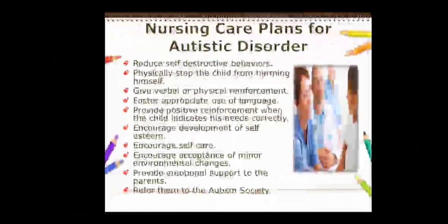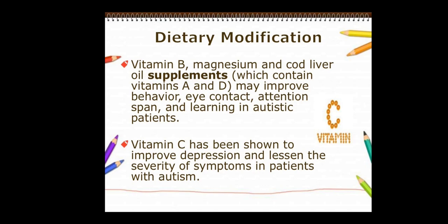For dietary modification, the child should be given vitamin B, magnesium, and cod liver oil supplements which contain vitamins A and D. Vitamins B, A, and D may improve behavior, eye contact, attention span, and learning in autistic patients. Vitamin C has also been shown to improve depression and lessen the severity of symptoms in patients with autism, as autistic children tend to remain aloof, sad, and lonely.